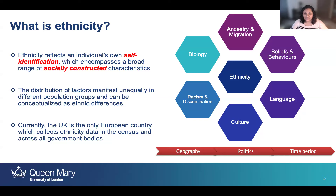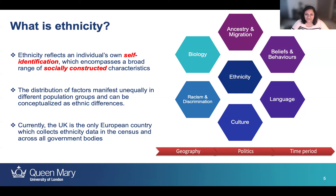These factors are situated within the geography and politics of a specific time period, and the definition of ethnicity may vary across these dimensions. The fact that these socially constructed and biological characteristics may manifest unequally between different population groups is what we consider to be ethnic differences. We're very lucky in the UK to be one of the only European countries which mandates the collection of ethnicity data in the census and across all government bodies. Indeed, in many countries in Europe, the collection of ethnicity-related data is considered illegal.